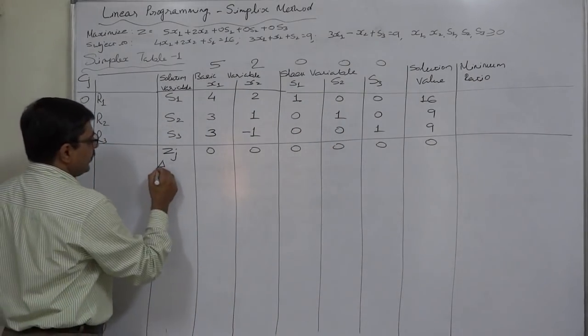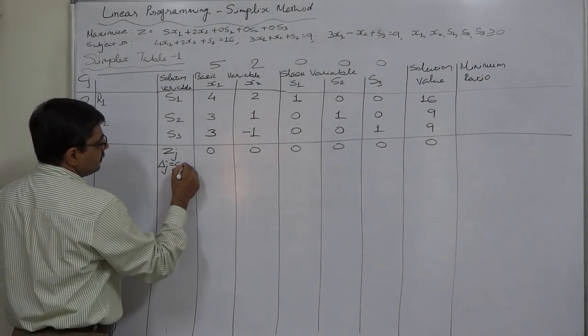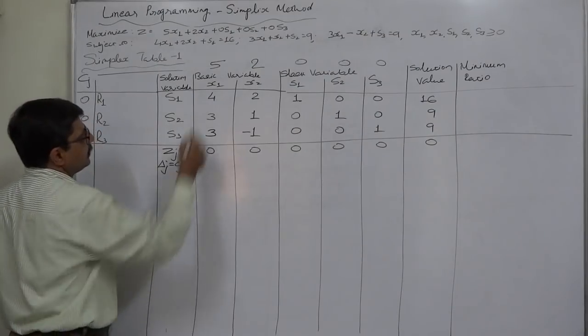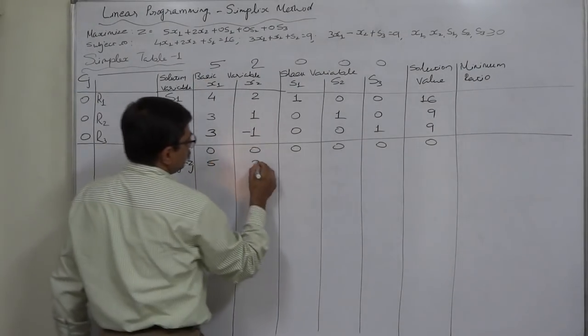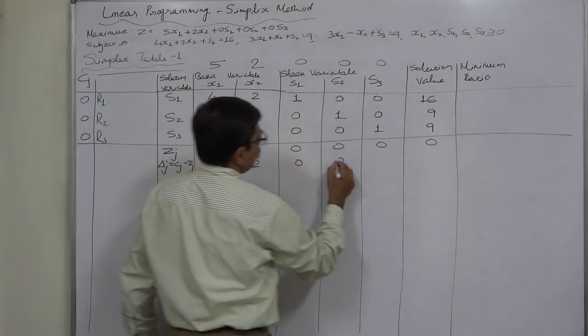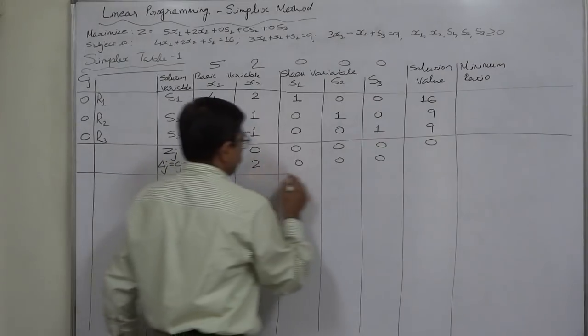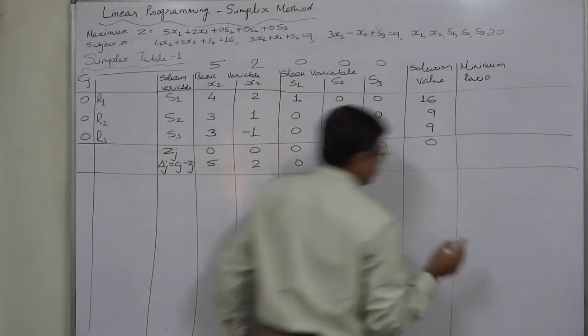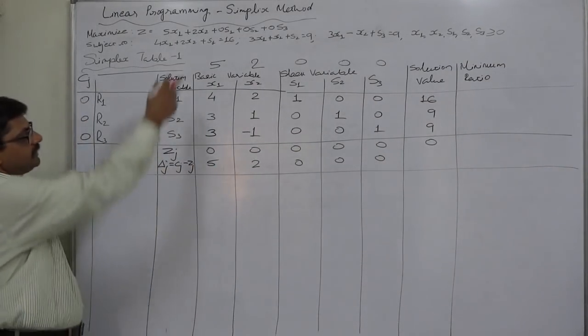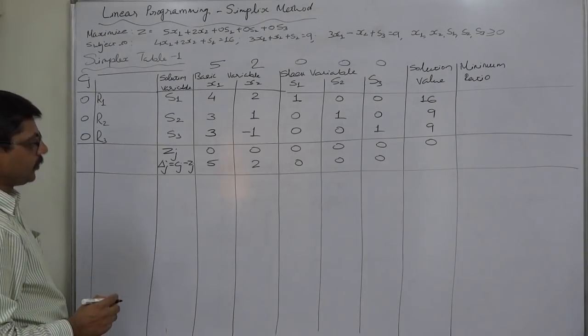Now we can write delta J that is CJ minus ZJ: 5 minus 0 is 5, 2 minus 0 is 2, 0 minus 0 is 0. This is the first simplex table from the simplified form of the original linear programming problem.